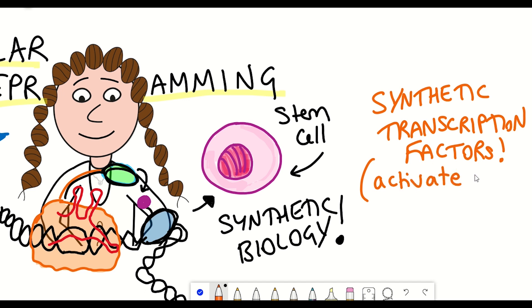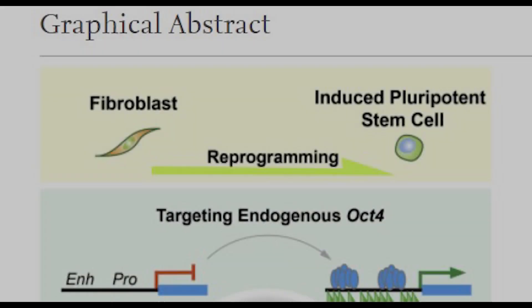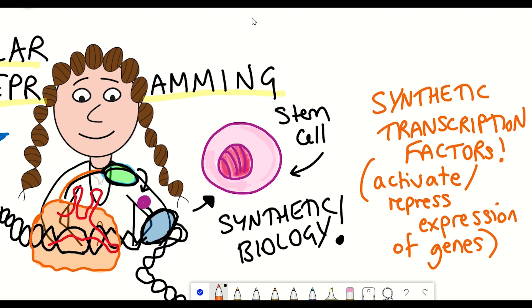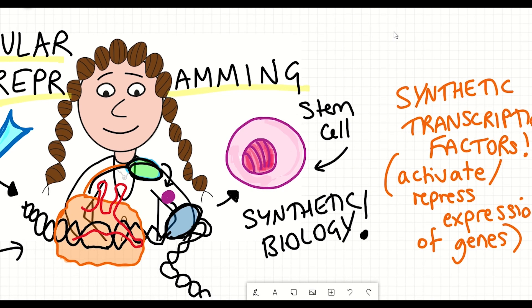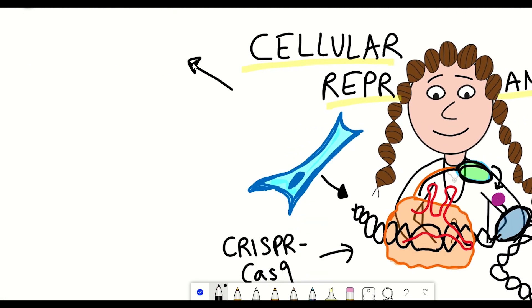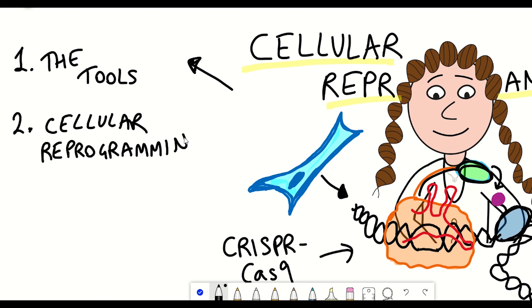And what's even cooler is that this approach has been used to activate genes within fibroblast cells to convert them back to so-called pluripotent cells, thereby achieving cellular reprogramming, turning one cell into a different cell state by using these CRISPR transcriptional engineering approaches. So first I'll briefly introduce you to these tools, and then we'll talk about cellular reprogramming, why it's useful, and then how these tools were used to achieve cellular reprogramming.